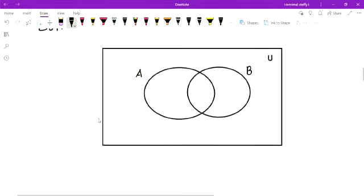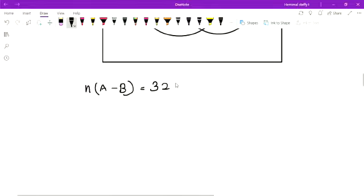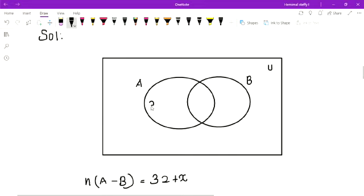Before I am writing the given, what is that? N of A minus B is equal to 32 plus x. That means where we are going to write 32 plus x here. This is the place of n(A-B). This is the place of n(A) minus B. So 32 plus x. This is the 32 plus x place.